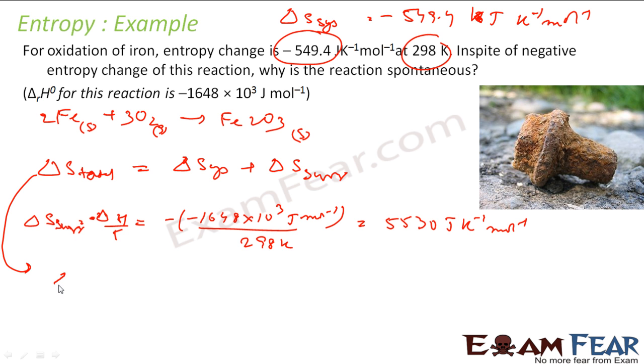I have to find delta S total. Delta S of system is -549.4 joule per kelvin per mole plus delta S surrounding which is 5530 joule per kelvin per mole. If you add this you get 4980.6 joule per kelvin per mole. So you see the whole value is positive, delta S total is positive, and that's why this reaction is spontaneous.